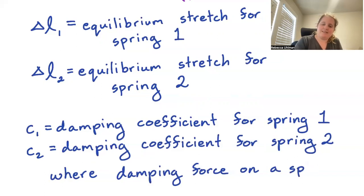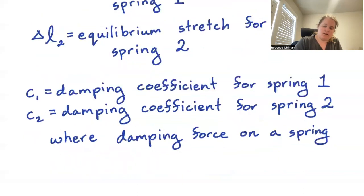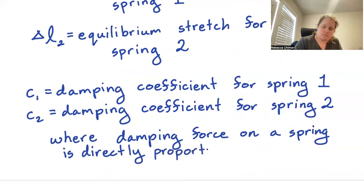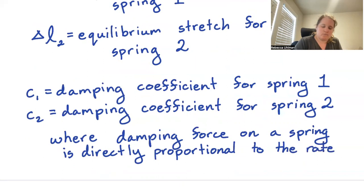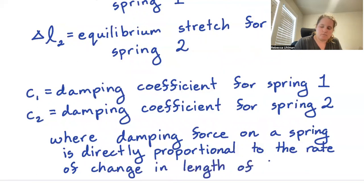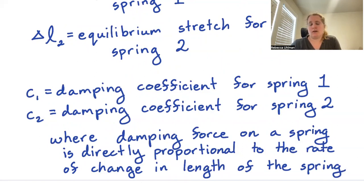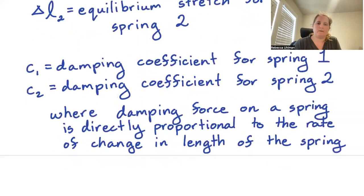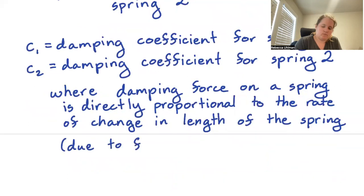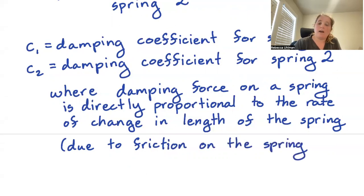The damping force on a spring is directly proportional to the rate of change in length of the spring. This damping force is due to internal friction on the spring, and it acts opposite to the motion.